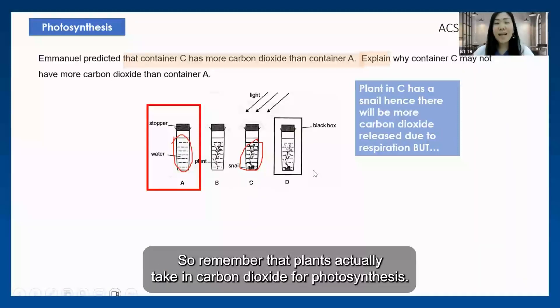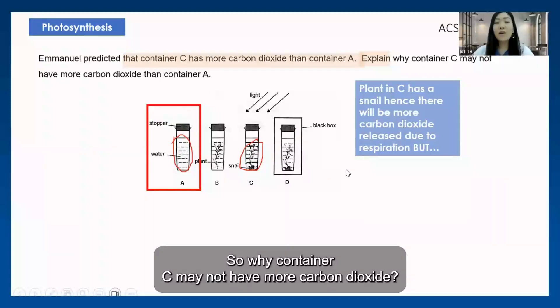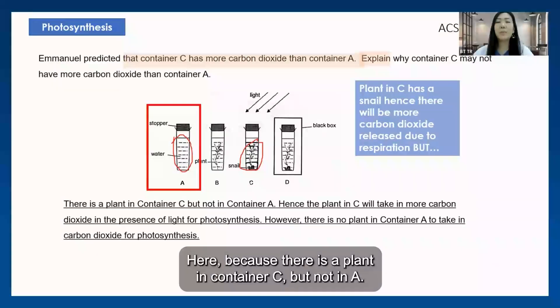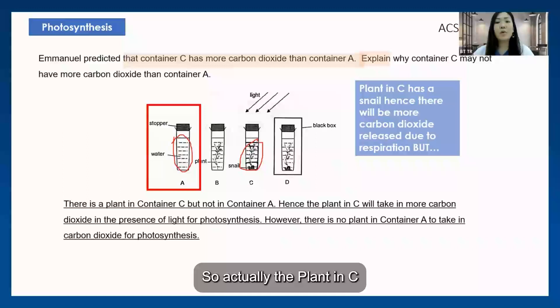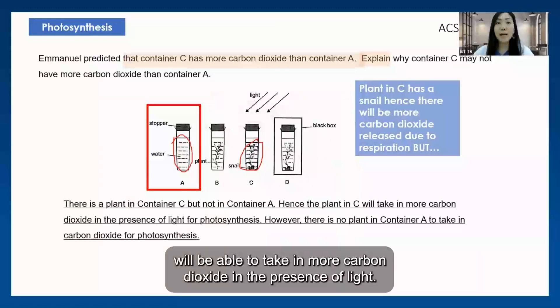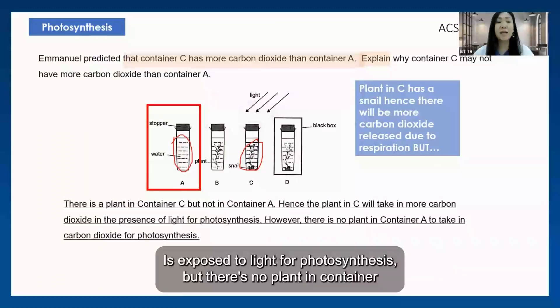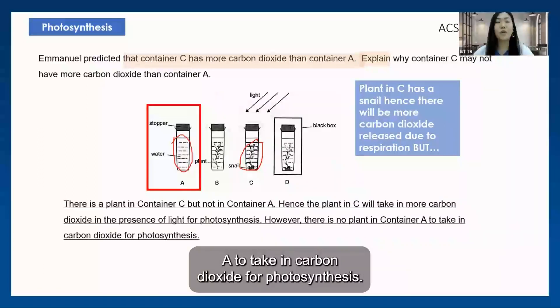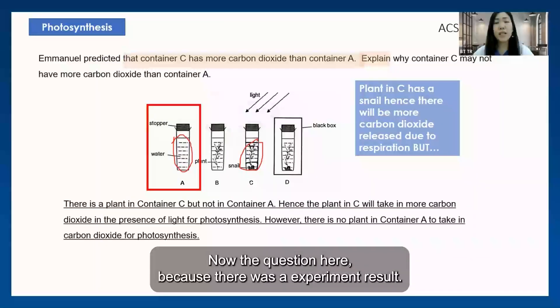Are you ready for your answer? Remember that plants take in carbon dioxide for photosynthesis. Why container C may not have more carbon dioxide: there is a plant in container C but not in A. The plant in C will be able to take in more carbon dioxide in the presence of light for photosynthesis, but there's no plant in container A to take in carbon dioxide for photosynthesis.